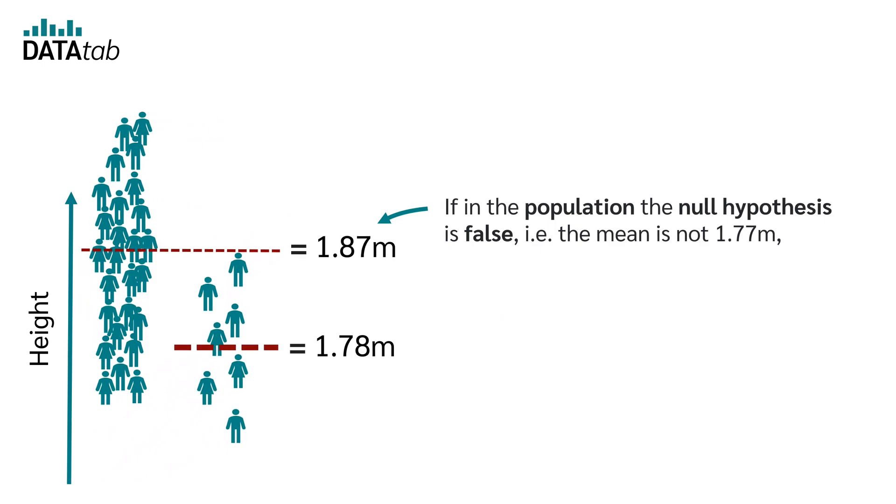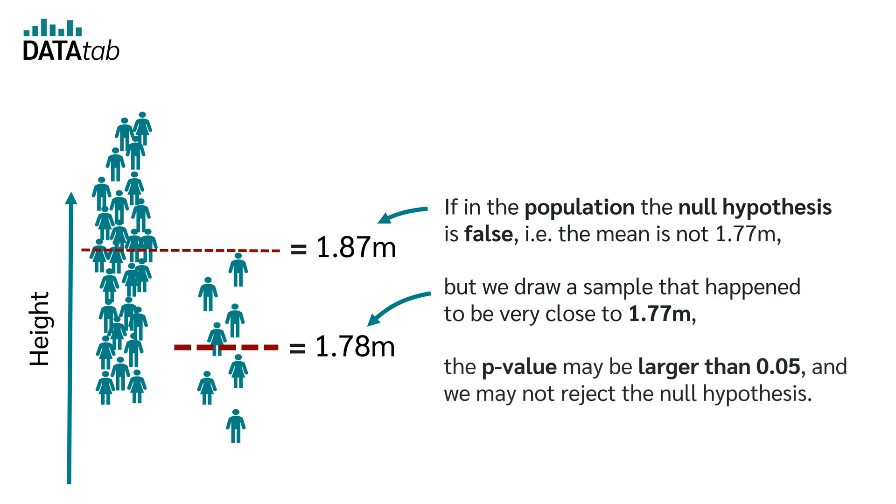If in a population the null hypothesis is false, i.e. the mean is not 1.77 meters, but we draw a sample that happened to be very close to 1.77 meters, the p-value may be larger than 0.05 and we may not reject the null hypothesis. This is called type 2 error.